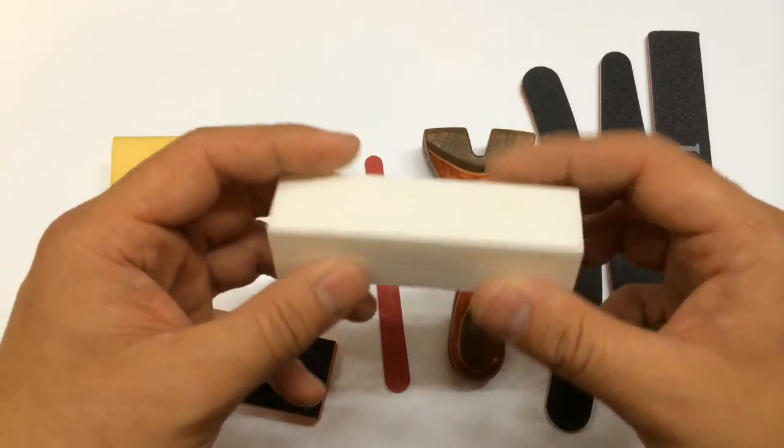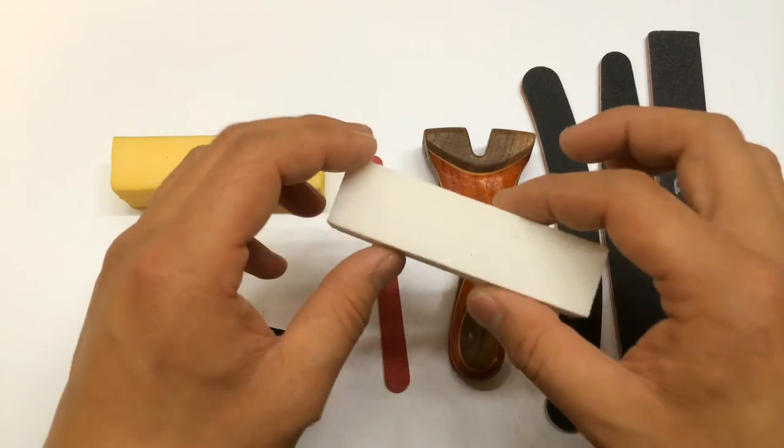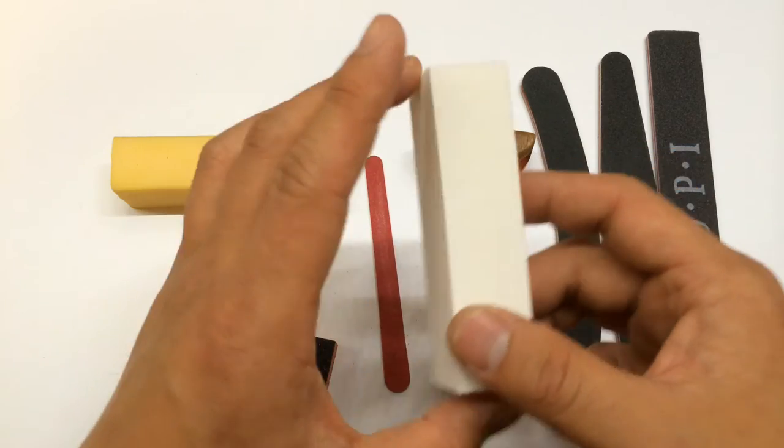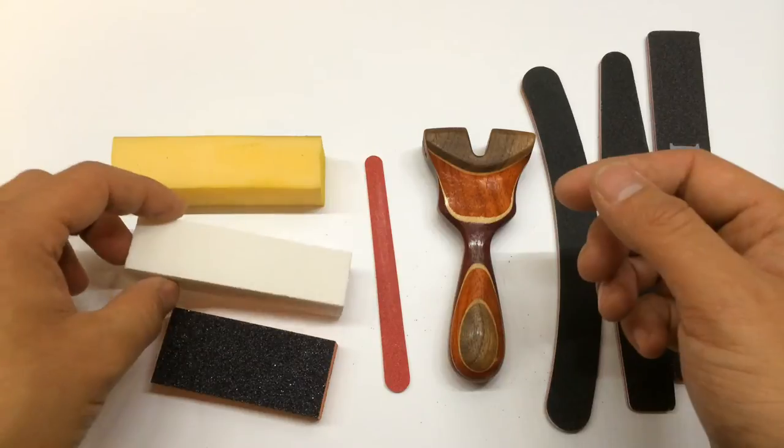So then I switched over to one of these white ones, which is a higher grit. This is about 240 grit. And it takes off very little material, but it smooths it out to a really nice smooth finish. And it doesn't mar the surface, which is really important when you're working with something that's so easily marred like wood.